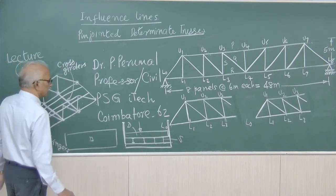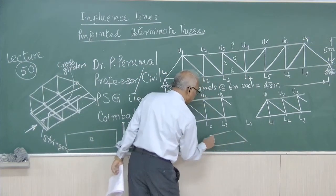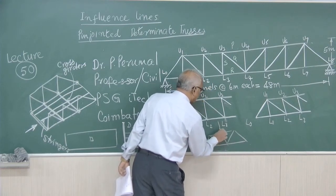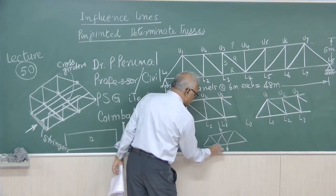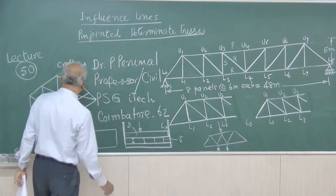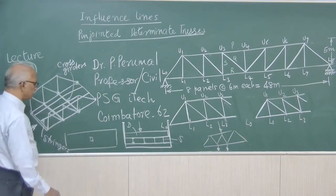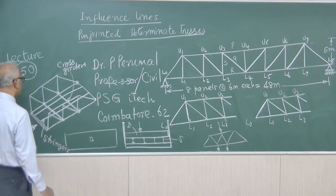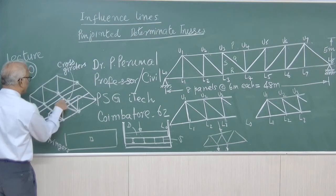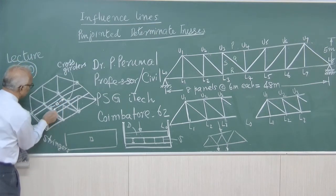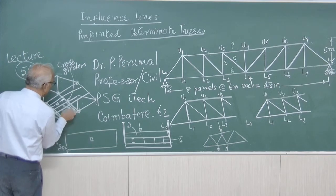That is why the truss will always receive loads only at the nodes — the load will be transferred through the bottom chord or top chord only at the nodes, not in between. The cross girder is connected to nodes of the truss. Depending upon the position of the load, it will be transferred to two adjacent cross girders, and those cross girders will transfer the load to the nodes of the truss.